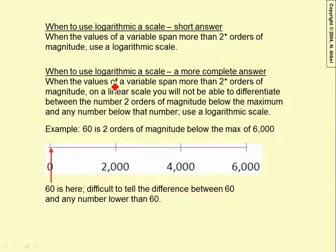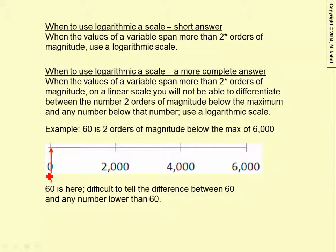So looking at this — when the values of the variable span more than two orders of magnitude, here's 60 and here's 6,000. So if there are any numbers below 60 — 50, 10, 2, 1 — on a linear scale, you would not be able to differentiate between the number two orders of magnitude below the maximum and any number below that. Any number below 60. So if the values of the variable span more than two orders of magnitude, use a logarithmic scale.